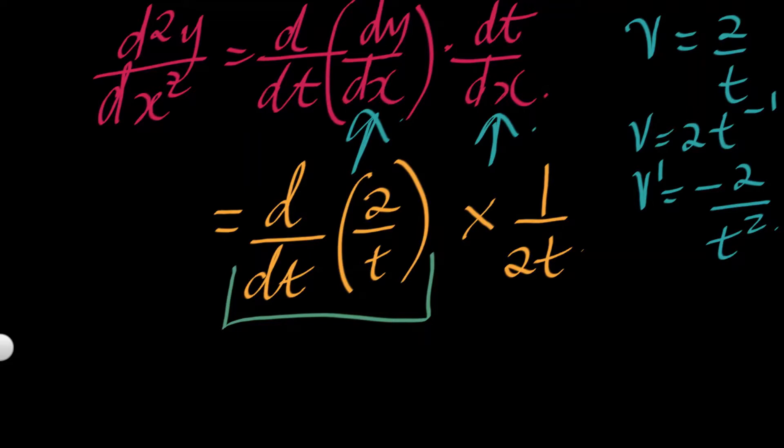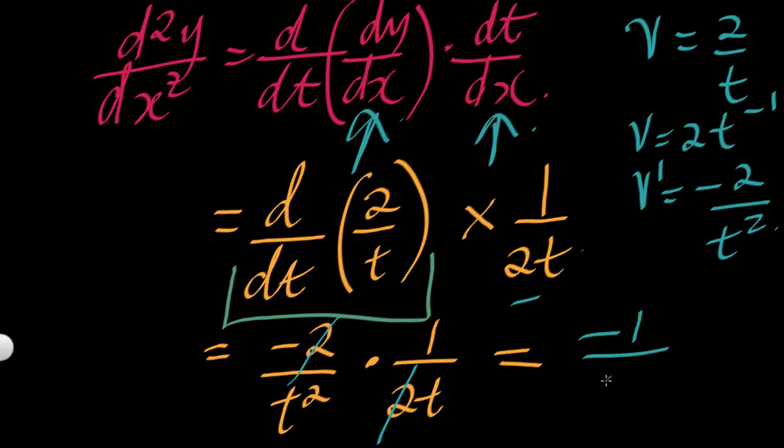That we are multiplying by 1 over 2t. So let's continue. This part here, the first part gives us minus 2 over t² being multiplied by 1 over 2t. Simple algebra, we're gonna cancel this and that, then the denominators multiply each other and the denominators multiply each other. In the end it will be minus 1 over t³. That's the second derivative.